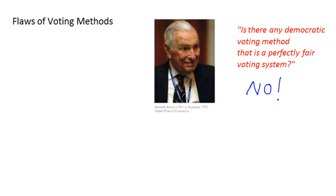Part of his proof earned him the Nobel Prize in economics. Basically, he's saying: if there's going to be an election that has more than two candidates in it, then there is no perfectly fair voting method or system. In fact, all voting methods have flaws in them.